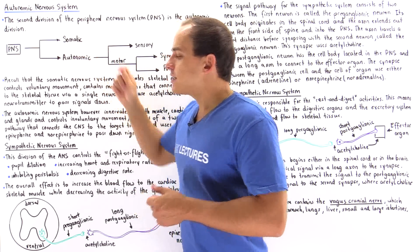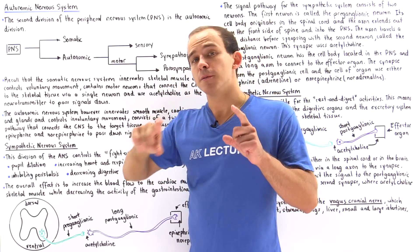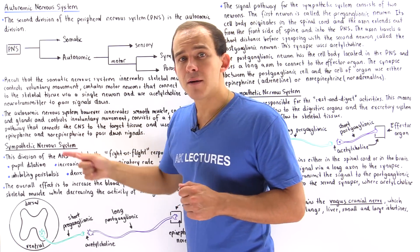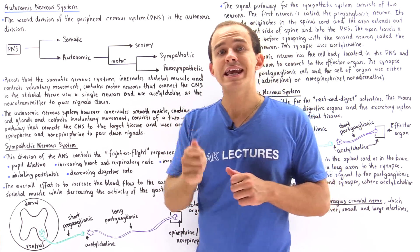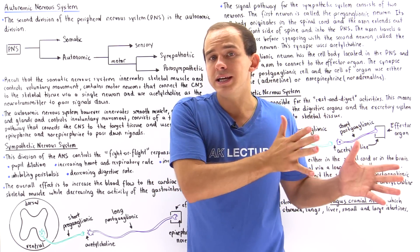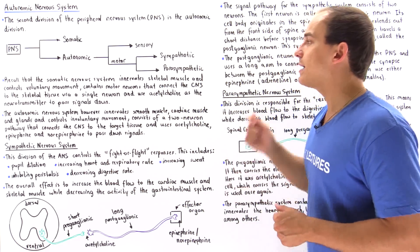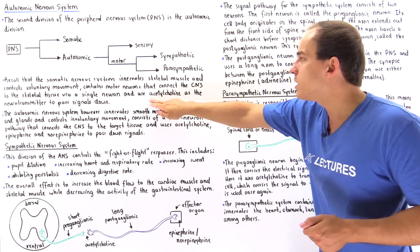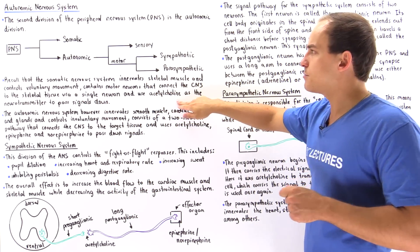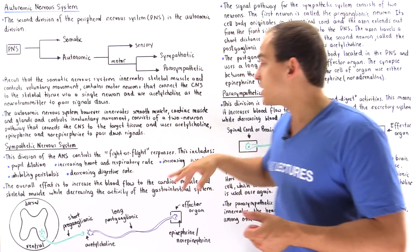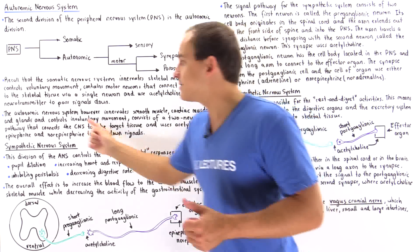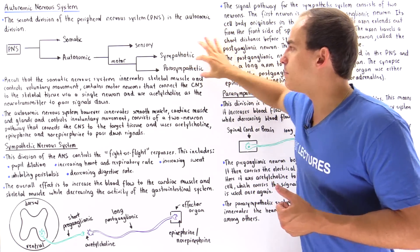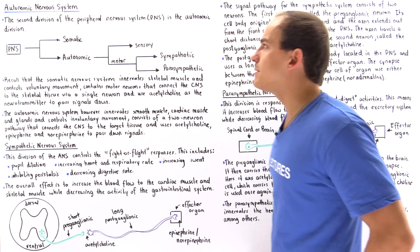The somatic nervous system consists of electrical pathways that have only one neuron. In the case of the autonomic, we usually have two neurons in our electrical pathway: a preganglionic neuron and a postganglionic neuron. In the somatic system, we only use the acetylcholine neurotransmitter. In the autonomic case, we use acetylcholine as well as, in some cases, epinephrine and norepinephrine.